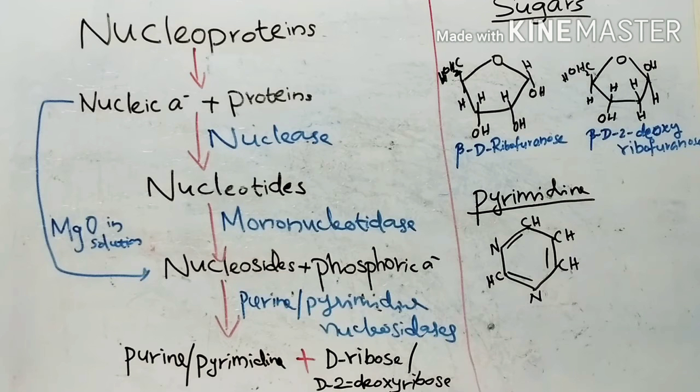A group of conjugated proteins characterized by presence of non-protein prosthetic group, nucleic acid, attached to one or more molecules of a simple protein. A basic protein histone or protamin is called nucleoprotein.